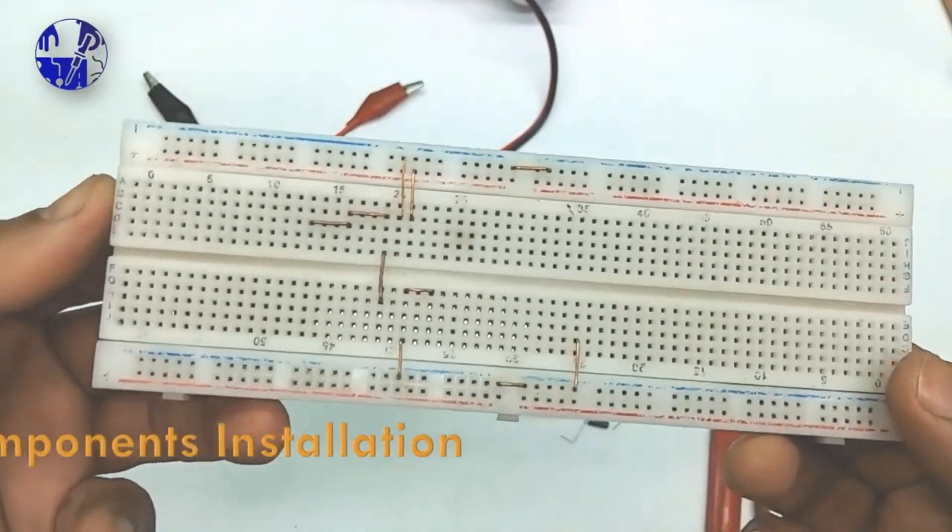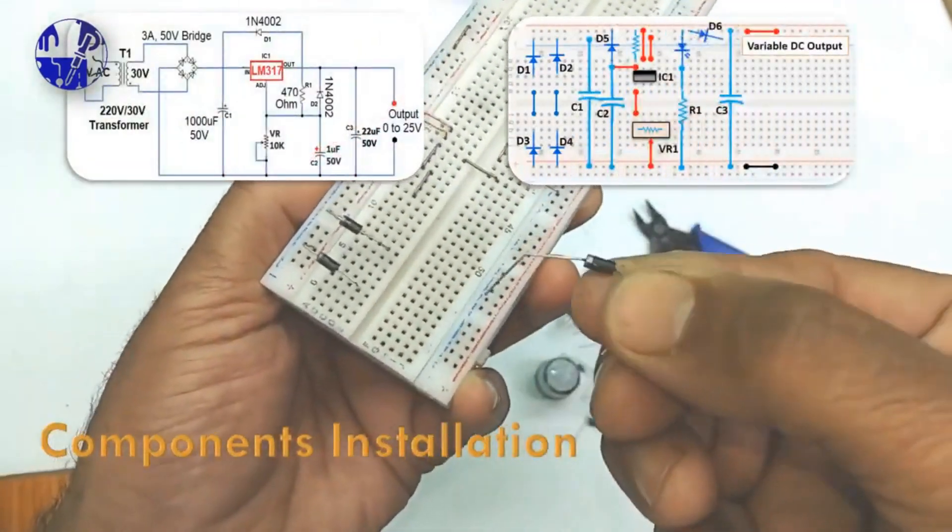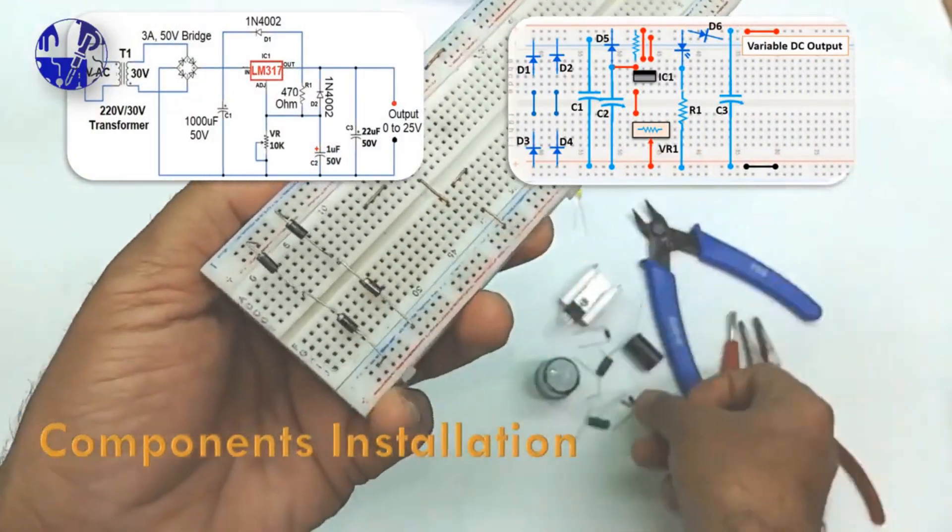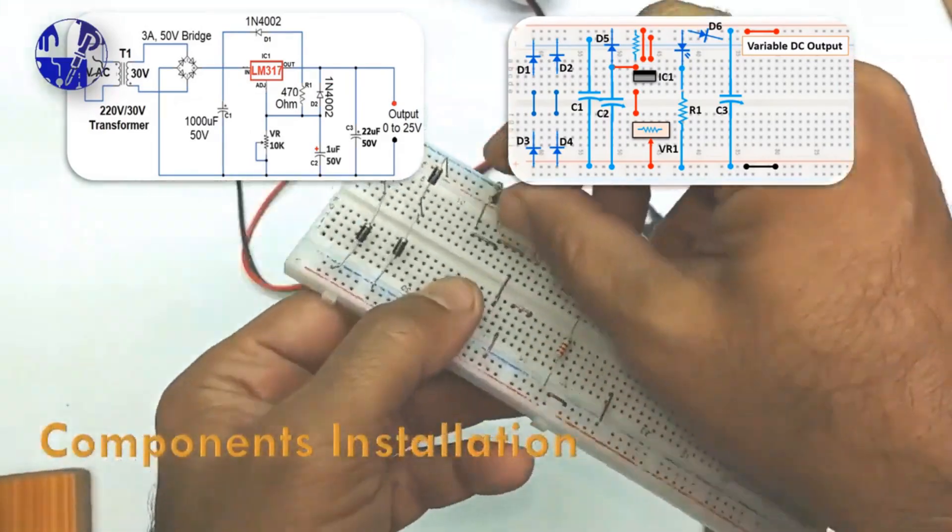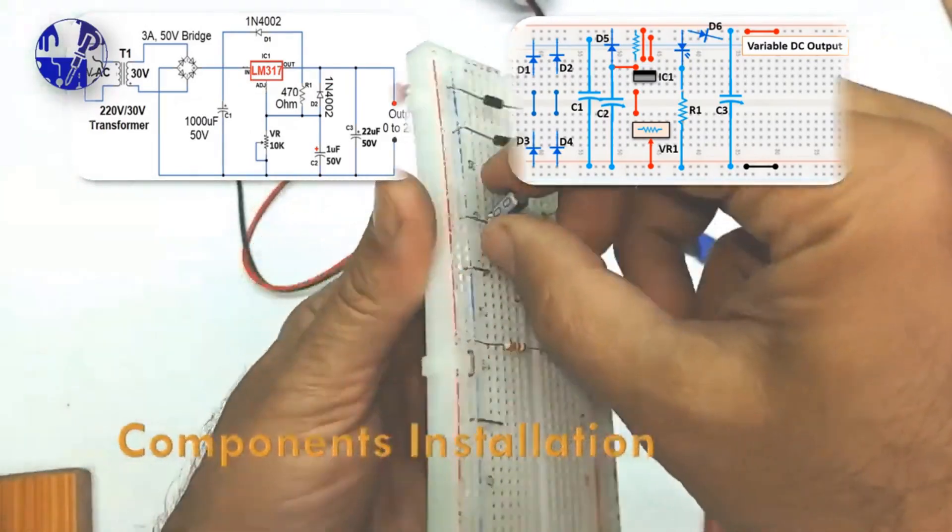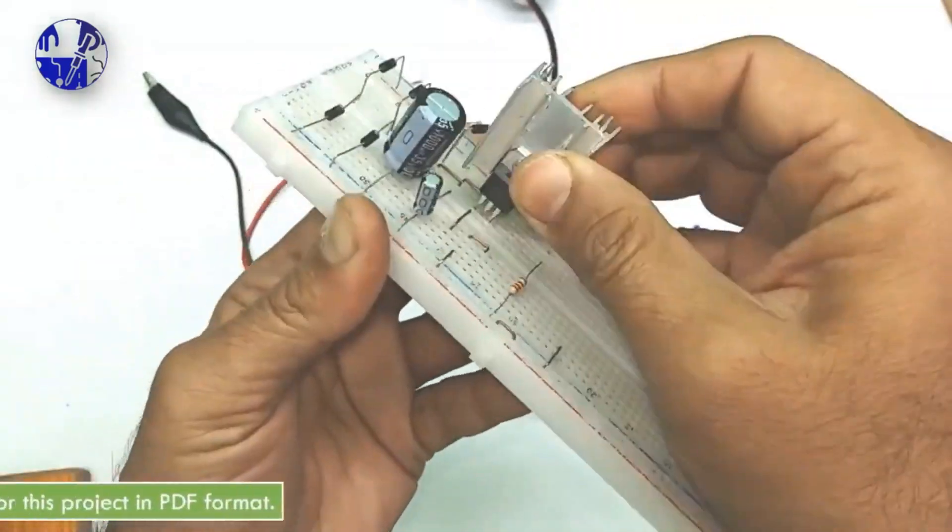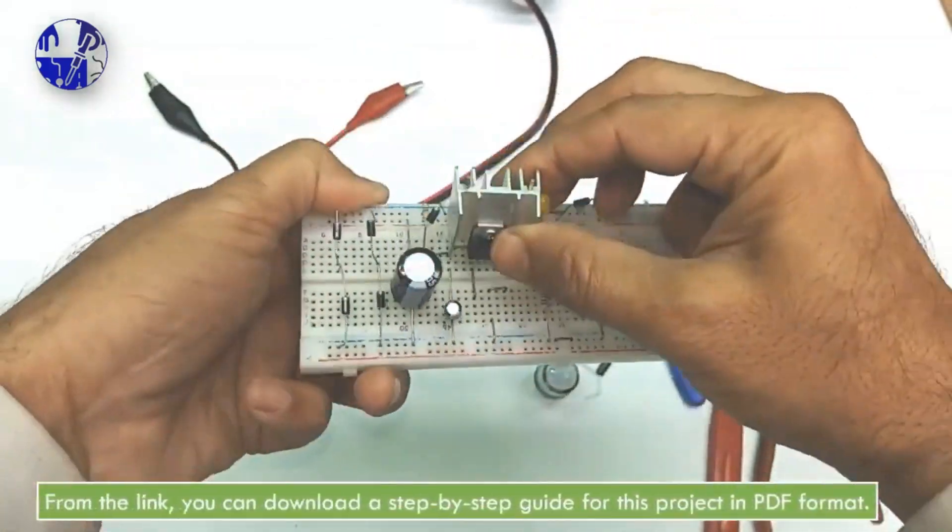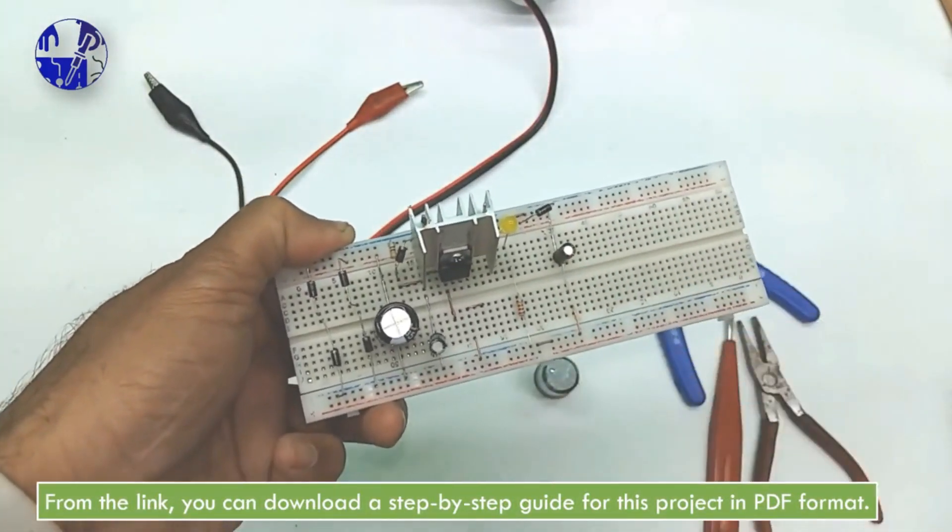Follow the circuit diagram displayed on the screen and install all components along with the jumper wires on the breadboard. You can download the image of the circuit diagram from the link in the description.